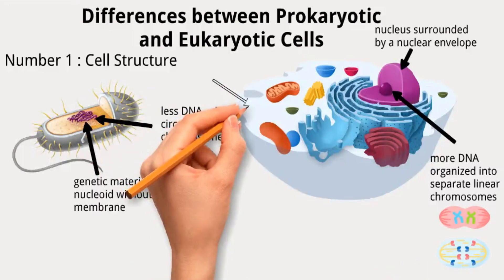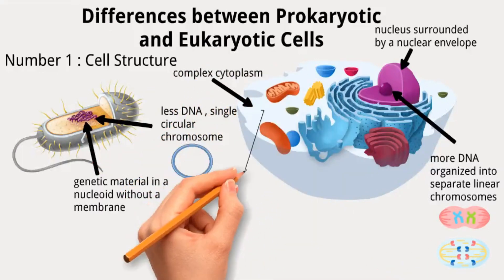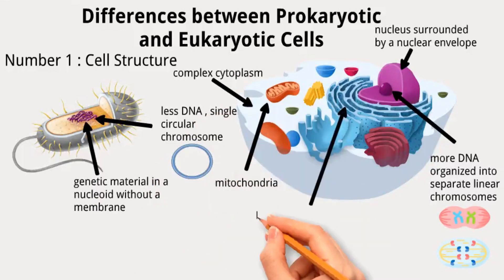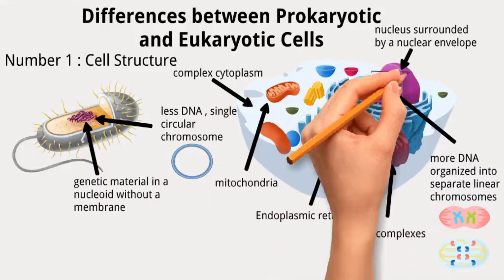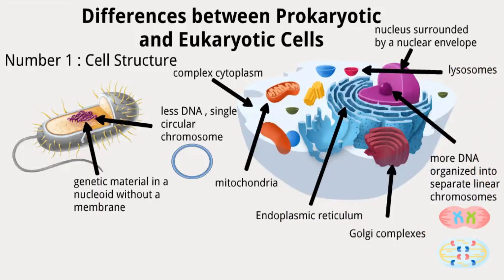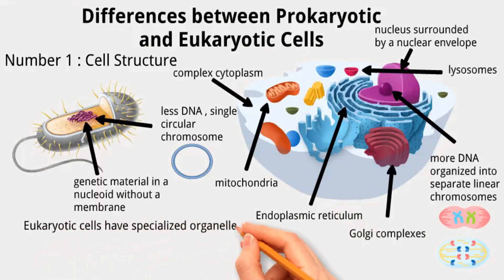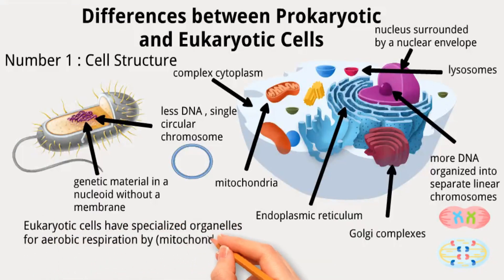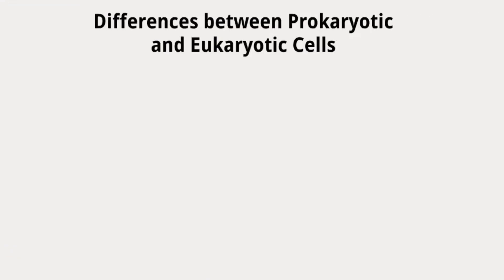Eukaryotic cells have a complex cytoplasm filled with membrane-bound organelles like mitochondria, endoplasmic reticulum, Golgi complexes, lysosomes, endosomes, and peroxisomes. Prokaryotic cells lack these structures, except in some cases. Eukaryotic cells have specialized organelles for aerobic respiration — mitochondria — and photosynthesis — chloroplasts.